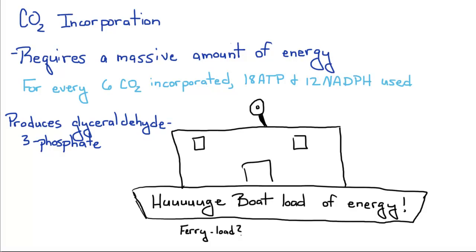For every six carbon dioxide that is incorporated, 18 ATP and 12 NADPH molecules are used. It's a crap ton of energy.